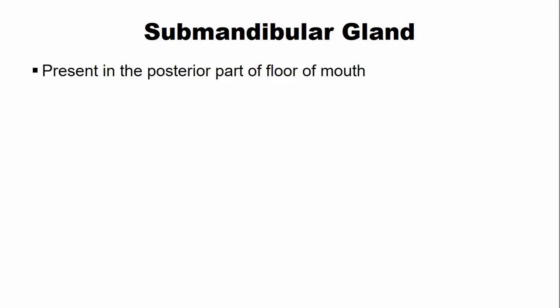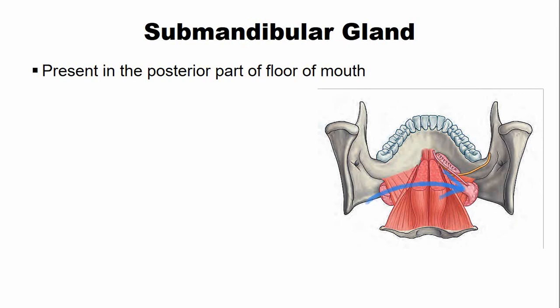The submandibular gland is present in the posterior part of the floor of the mouth. Anterior to this gland, the sublingual gland is present.